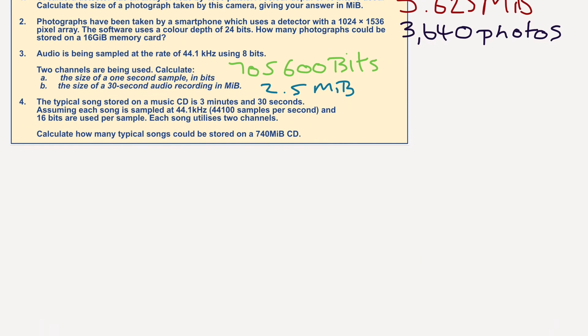And finally, question four, we have a typical song stored on a music CD is 3 minutes and 30 seconds long. Assuming each song is sampled at 44.1 kilohertz, 44,100 samples per second, and 16 bits are used per sample, each song utilizes two channels. Calculate how many typical songs could be stored on a 740 megabyte CD. Well, let's do the multiplication first of all. We need to go, as before, 44,100 multiplied by 16 bits, multiplied by 210. That's the number of seconds.